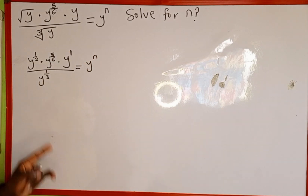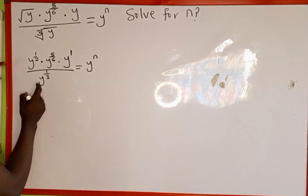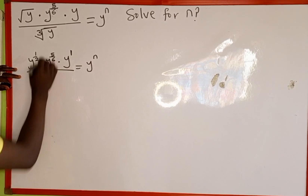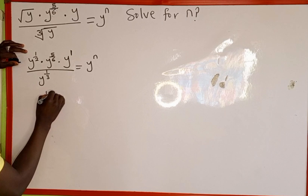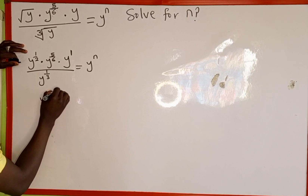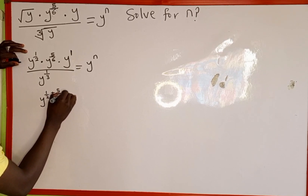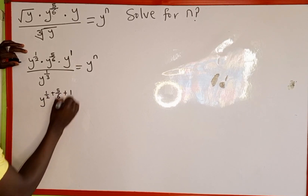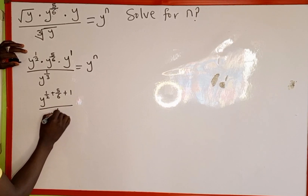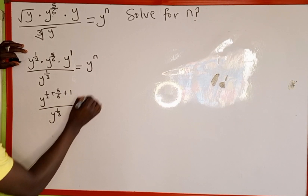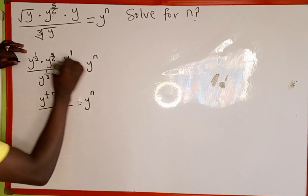Recalling the multiplication property of indices: in the numerator, we write one of the bases and add all the powers. The first power is 1 over 2, plus the second power 5 over 6, plus 1. Everything all over y raised to the power of 1 over 3, which is equal to y raised to the power of n.